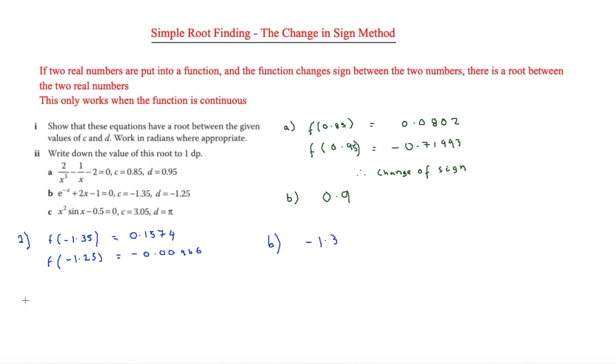The final question of this part is number 3. This is going to be x squared sine x minus 0.5. If we put f of 3.05 in, we get 3.05 squared times sine 3.05 minus 0.5, which equals 0.3508.